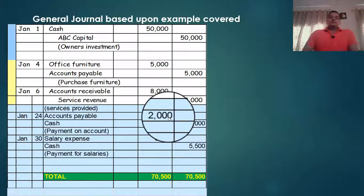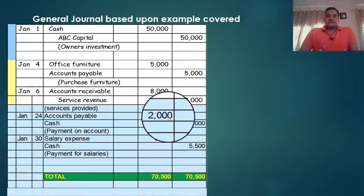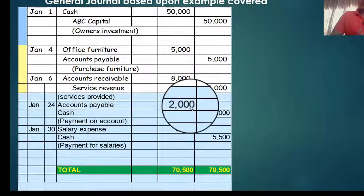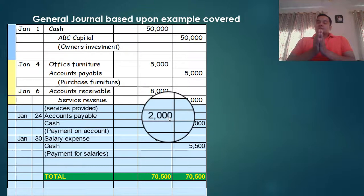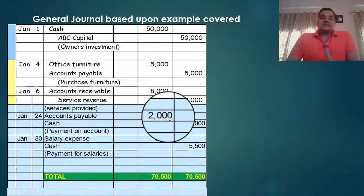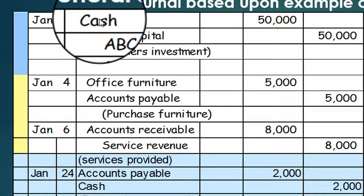This is the same example covered in lecture number 3, where we discussed about the journal. This was the end result with five transactions: cash account, ABC, furniture, accounts payable, accounts receivable, service revenue, accounts payable, cash, salary expense, and cash. When we plan to make a ledger, we have to maintain unique accounts — there will not be any duplicate account with the same name.